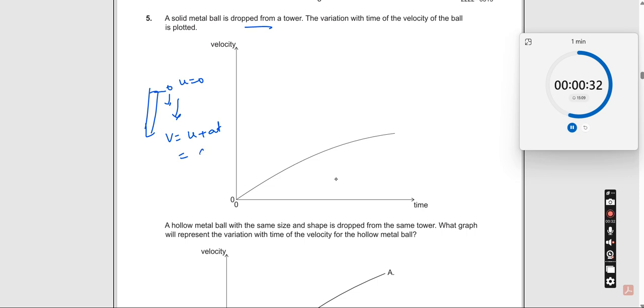So you should get u equal to zero, which should be g into t, which means you are supposed to get a straight line like this. But why is it coming down like this? Because the velocity is decreasing. When will the velocity decrease? When there is an opposite force.